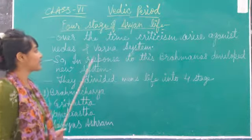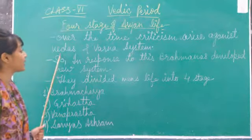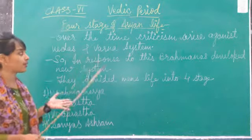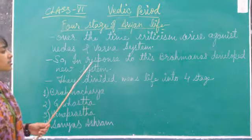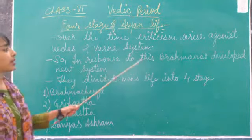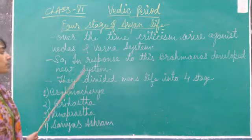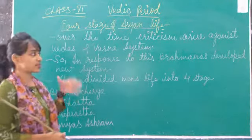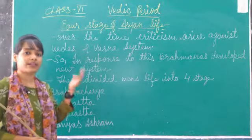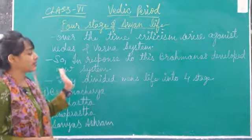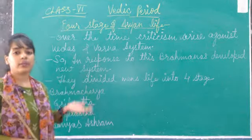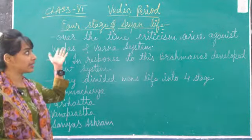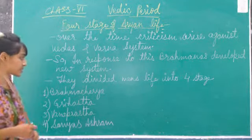Over time they criticised the Varna system, the Vedas and Varna system that I have already explained. So in response, the Brahmins developed a new system. Brahmins took the responsibility of that Varna system and developed a new type of system, because they divide life into 4 stages.